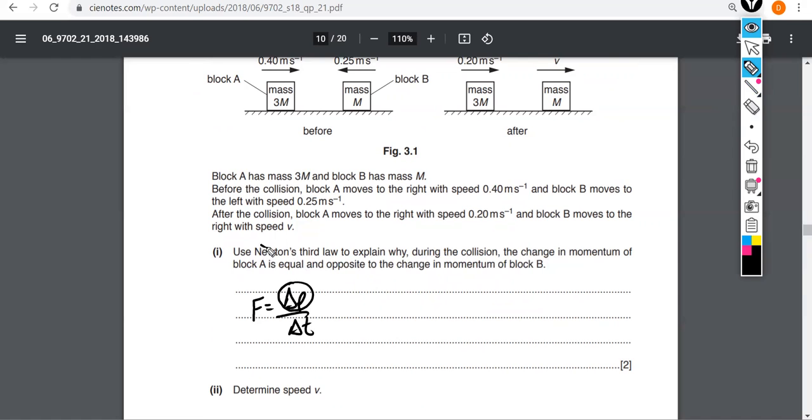Here it's saying, use Newton's third law to explain why the change in momentum. So it's saying just the numerator now. It's not saying the rate of change. It's saying use Newton's third law, which tells us something about forces to explain why during the collision, the change in momentum of block A is equal and opposite to the change in momentum of block B.